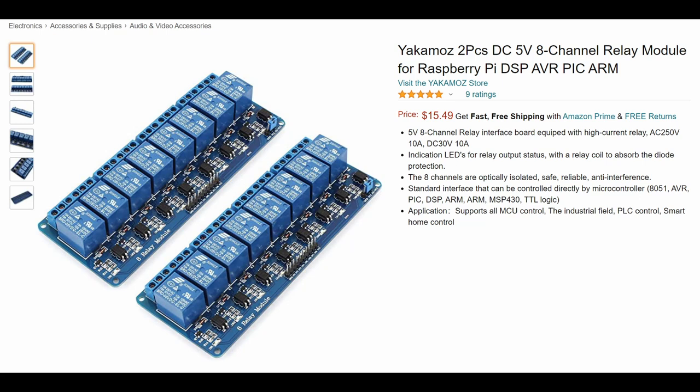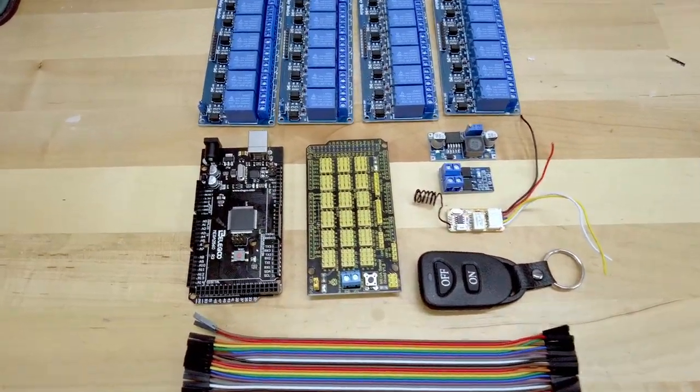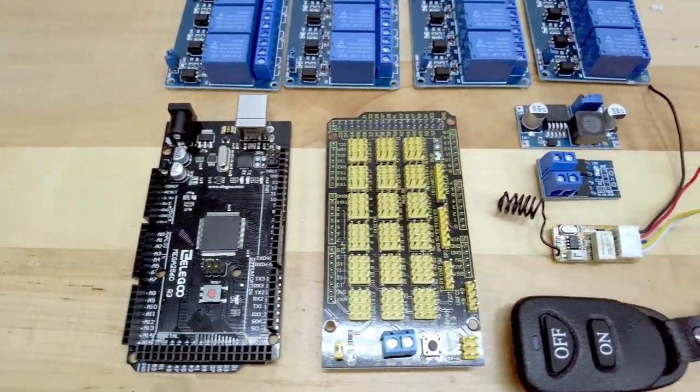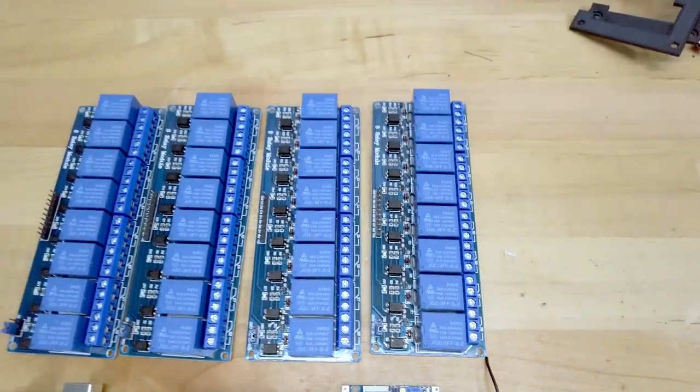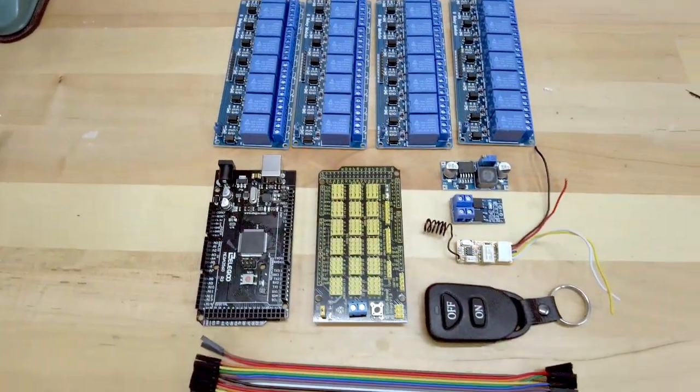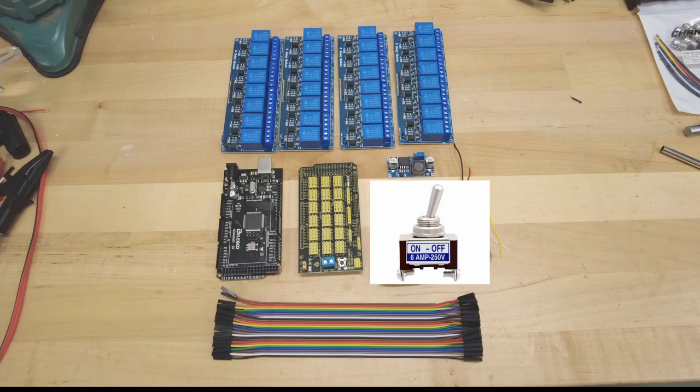For this new controller I wanted 32 outputs so I plan to use these inexpensive relay arrays. To control the outputs I'll use the Arduino Mega 2560 because it has up to 54 outputs in a pretty small package. I'll add a daughter board to make the connections easy and a few other tidbits like the voltage regulator, remote switch, and connecting wires. To cut costs you don't even need to use a remote switch. Instead you can just use a standard toggle switch although it's a lot less cool.